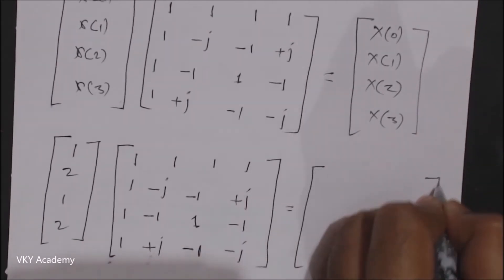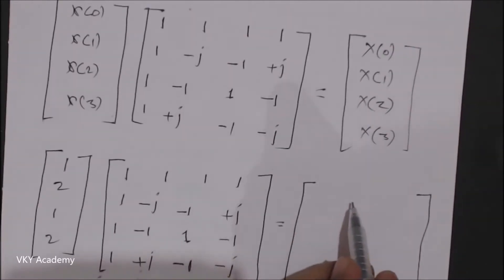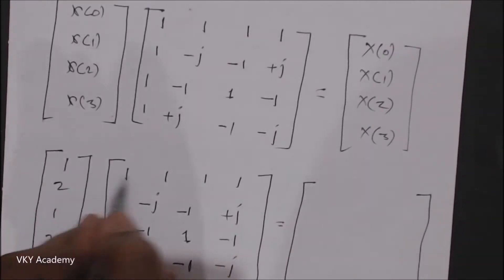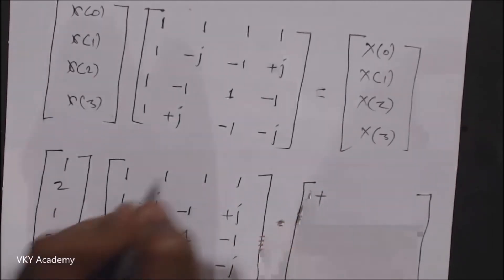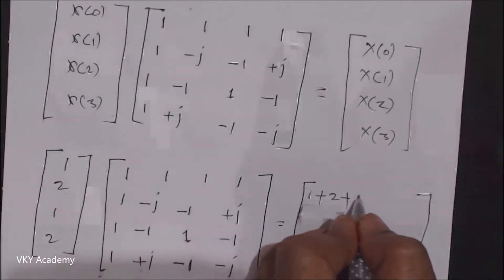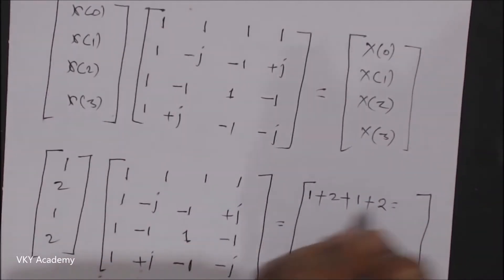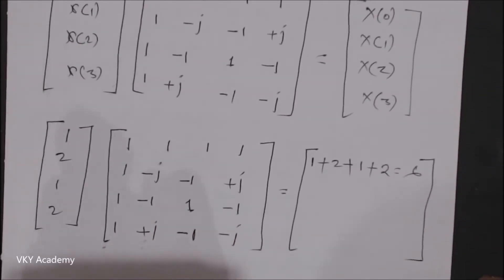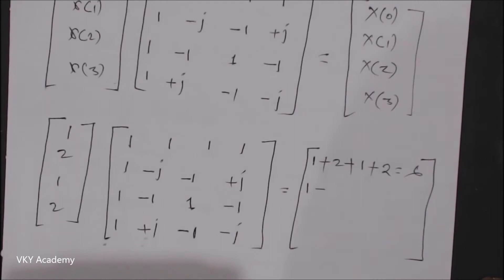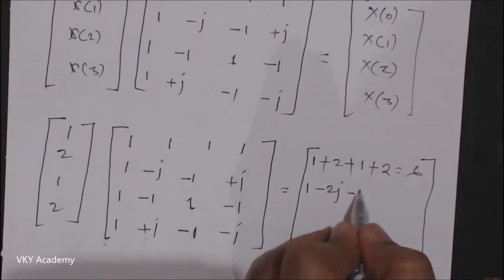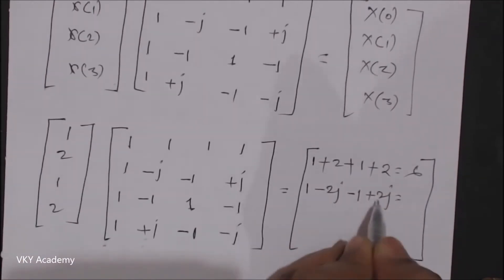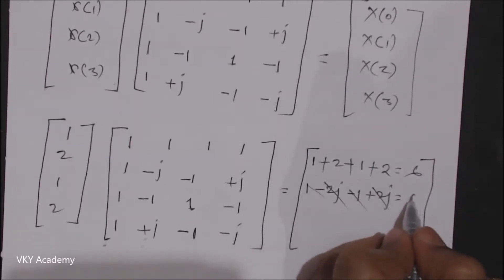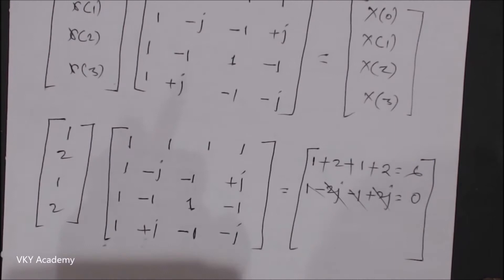The first output X(0) is computed as: 1×1 + 2×1 + 1×1 + 2×1 = 1 + 2 + 1 + 2 = 6. So the first DFT result is 6. The second output X(1) is: 1×1 + 2×(-j) + 1×(-1) + 2×(+j) = 1 - 2j - 1 + 2j = 0. So X(1) = 0.